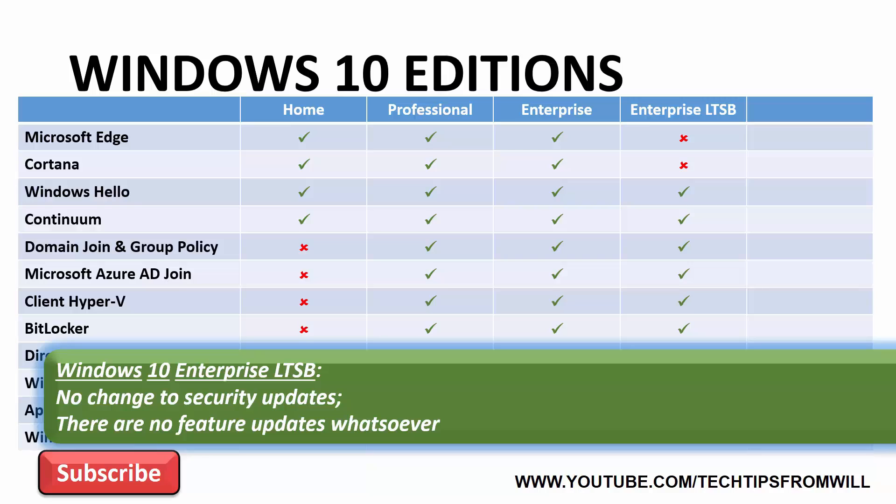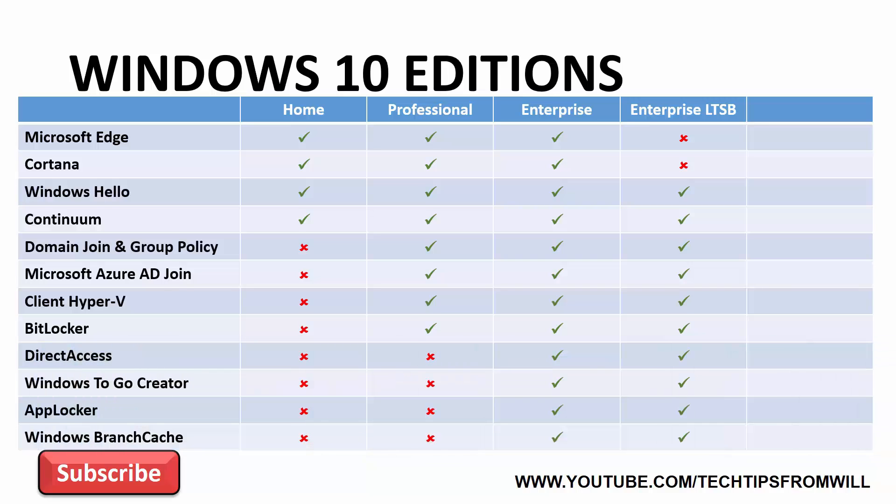The big difference with Windows 10 Enterprise LTSB is that it receives no feature updates whatsoever. Windows 10 is an operating system that is continuously improved, and improvements are distributed to customers as feature updates. However, for some enterprises, the idea of their computing environment continuously changing is not an attractive idea. Windows 10 Enterprise LTSB is aimed at businesses that would prefer their computers to remain in a known static environment. This is why Windows 10 Enterprise LTSB does not have access to Cortana or Microsoft Edge, since these features are forever being improved through feature updates. Essentially, your environment doesn't change much, but unfortunately you miss out on all of the latest Windows improvements.